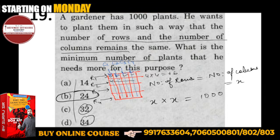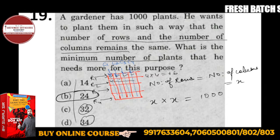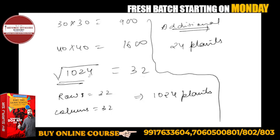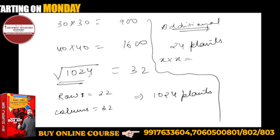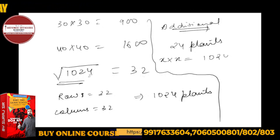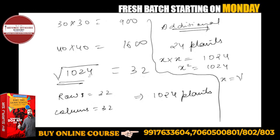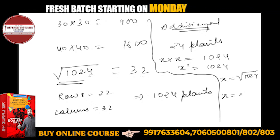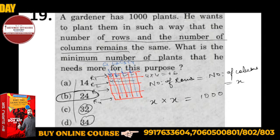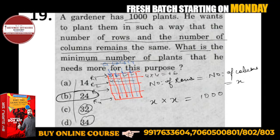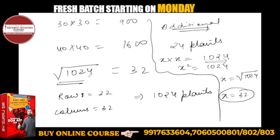What is the minimum number of plants he needs more for this purpose? The answer is 24. Now be careful — don't just look for the square root of 1024 and say the answer is 32. The question asks for the minimum number of additional plants. You already have 1000 plants, so to make it 1024 you need 24 more plants. Take care.